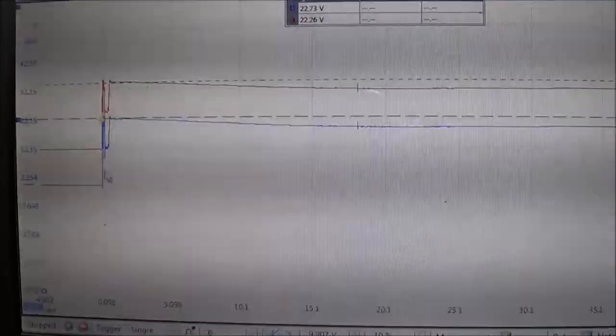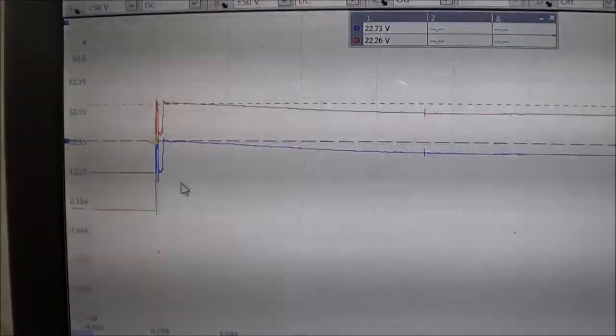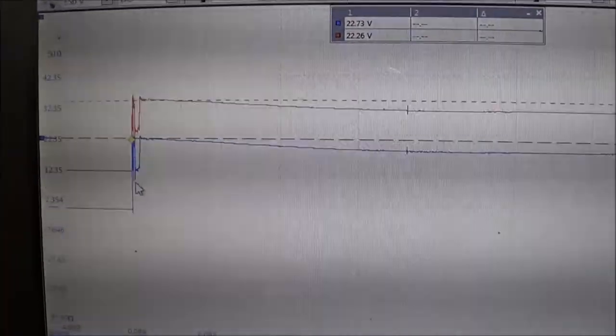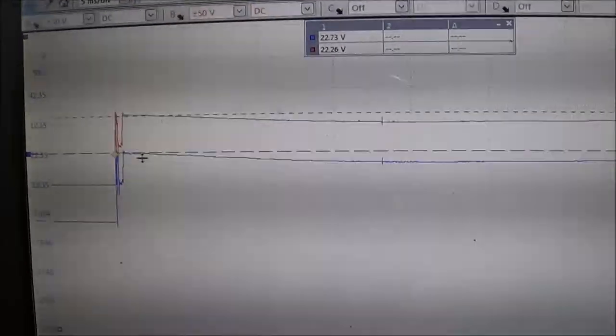So as you can see right now from the trace, my channel A which is the blue trace and my channel B which is supposed to be my collector, so I'm hooked up to the collector and the base, and as you can see both traces are identical, which shouldn't be that way.